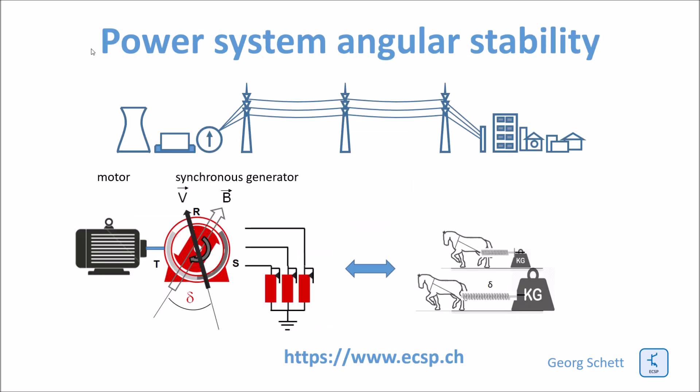When a synchronous generator applies real power to the system, a mechanical torque has to be applied to the shaft of the generator. This mechanical torque is provided by an engine connected to the shaft. The engine could, for example, be a turbo motor, a hydraulic turbine, or a gas turbine.